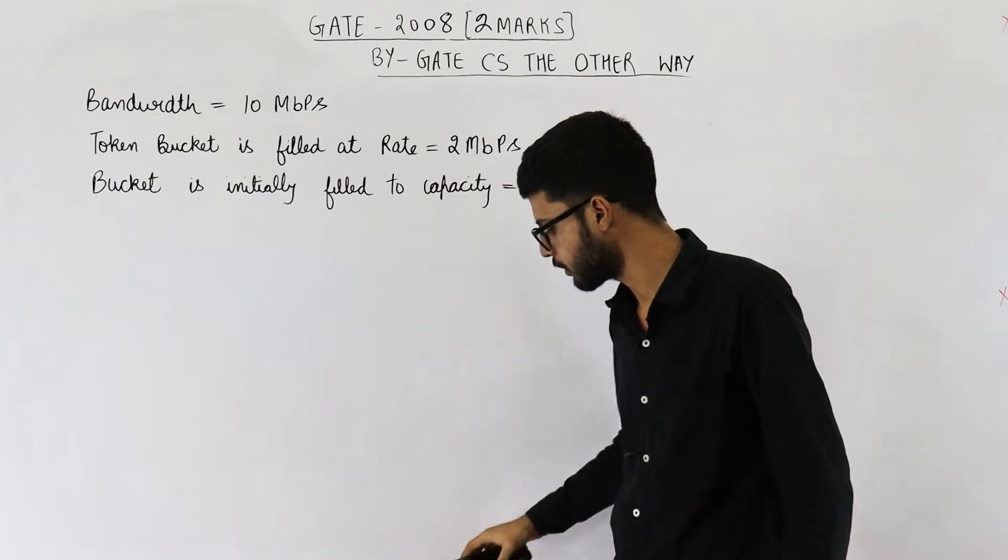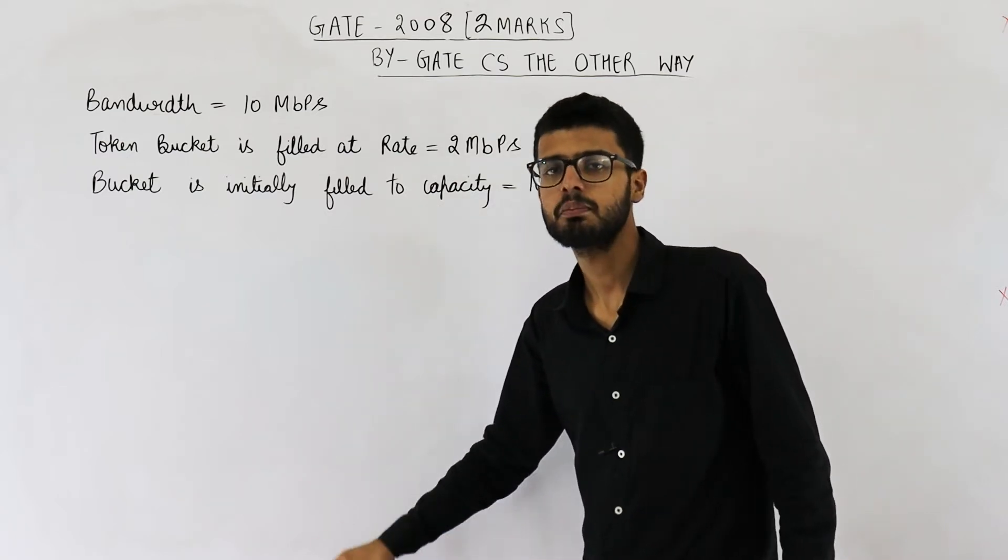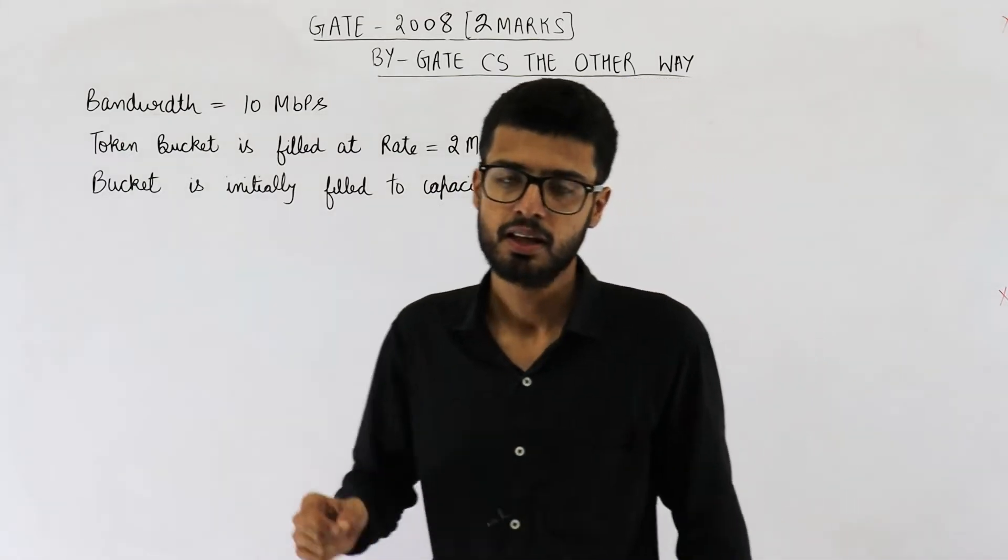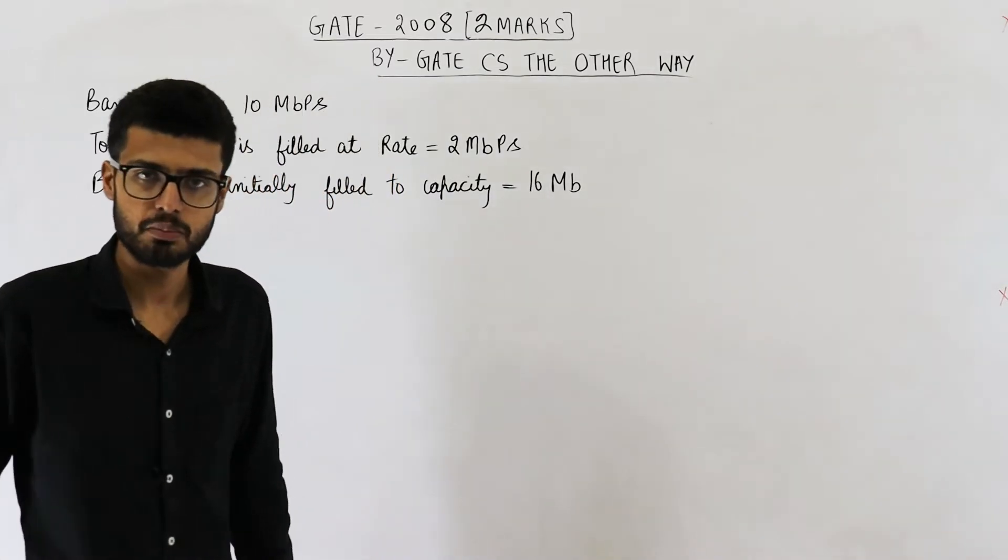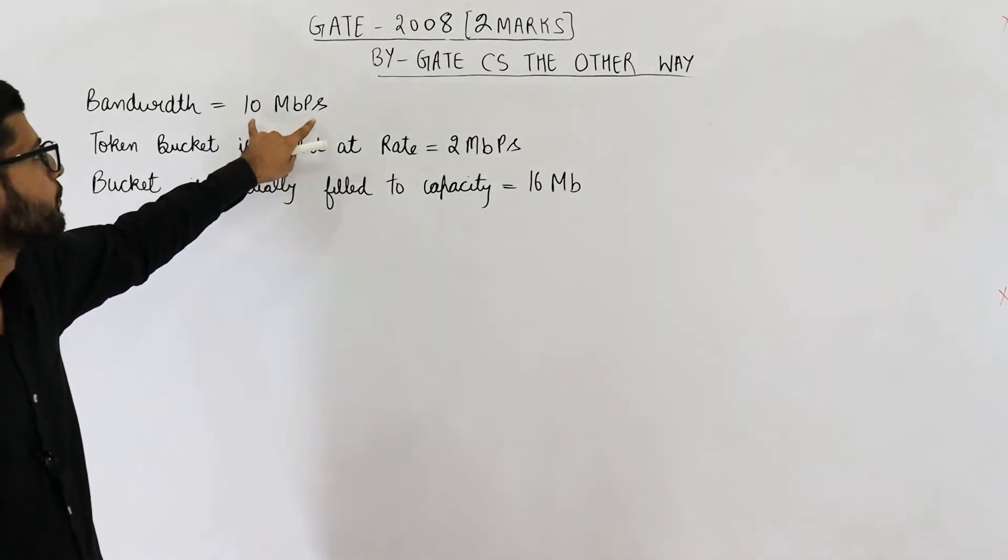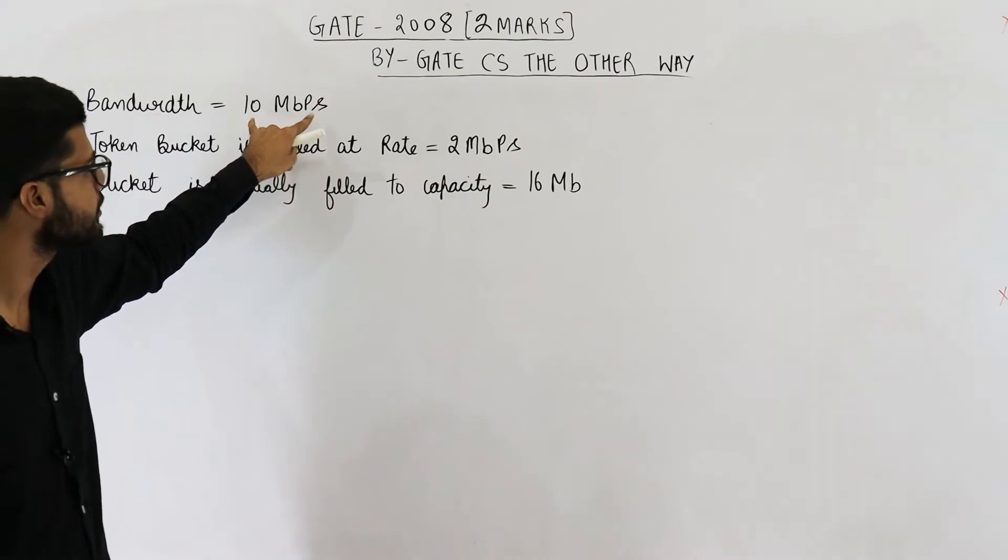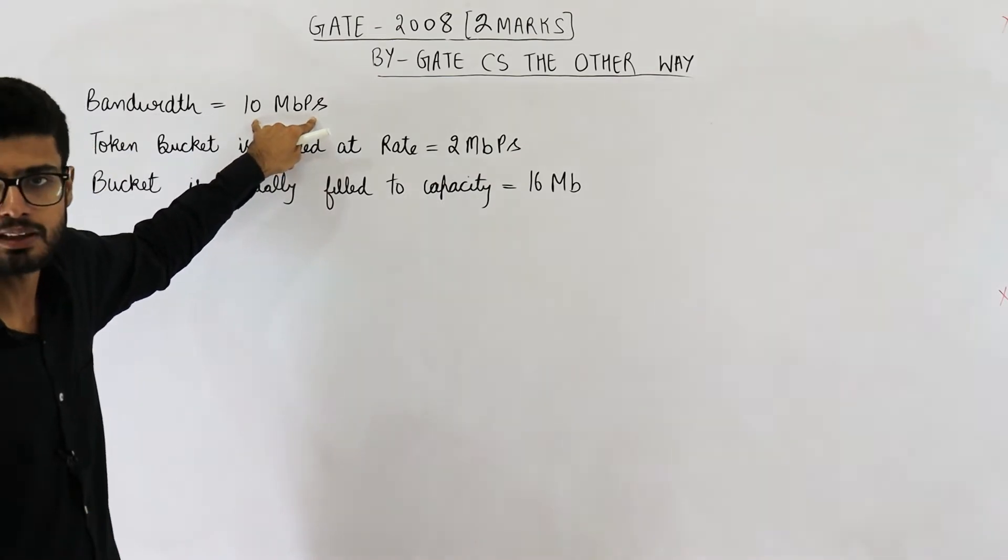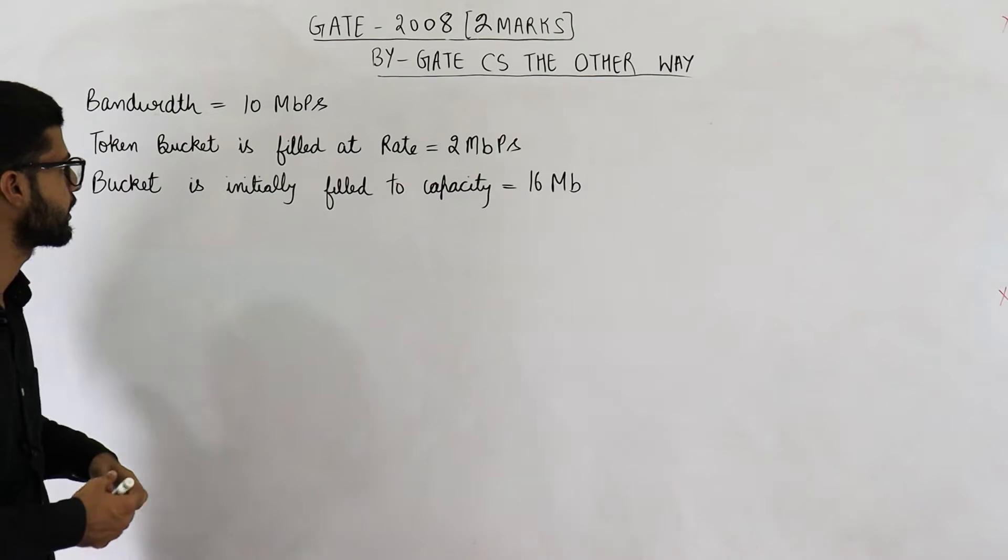I've noted down the important points here. They are saying bandwidth is 10 Mbps. This means even if you have some tokens in the bucket, you can't go beyond this limit. This is the maximum capacity or maximum rate of sending data.